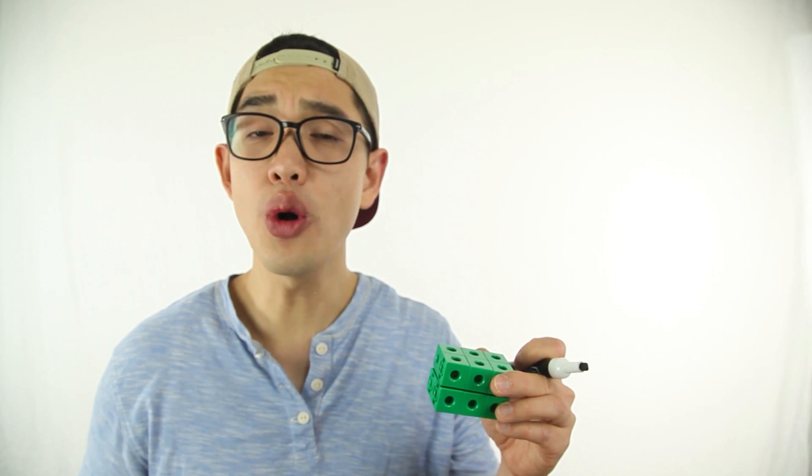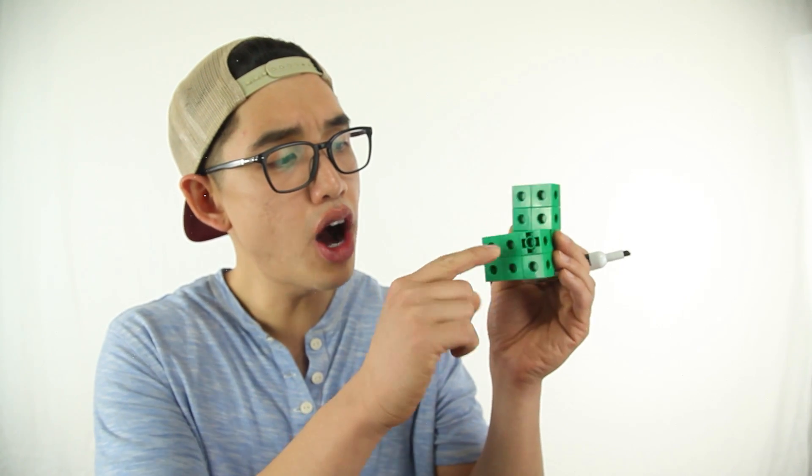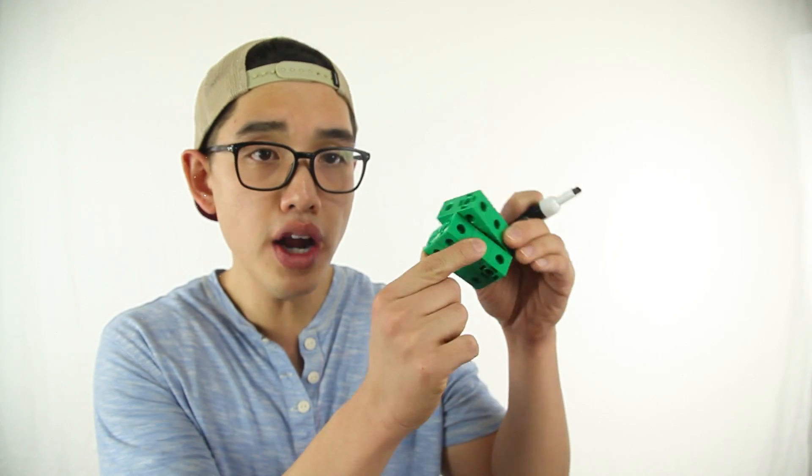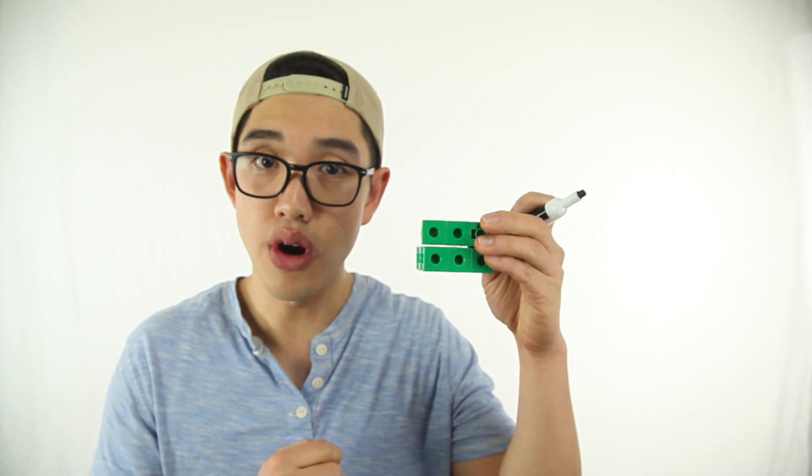And remember, the formula for volume is base times height, where you try to figure out how many cubes there are in the bottom layer, or the base, and multiply it by the height, or how many layers there are.